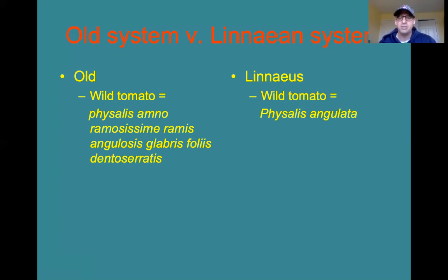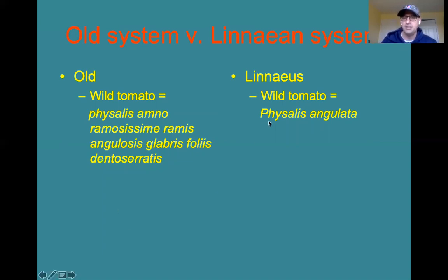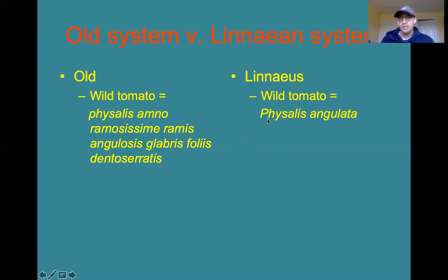So Linnaeus's system is the binomial nomenclature, where the organism's name consists of two words: the organism's genus and then its species epithet. So the genus for the wild tomato is Physalis and the species epithet is angulata. Notice the way we write scientific names: when typed they are italicized, the genus is capitalized, the species epithet is lowercase. That is always the way we write scientific names. If you're handwriting them, simply underline them. After you write them one time in a paper, you could shorten it to P. angulata from then on out.